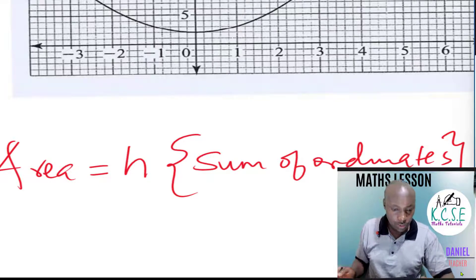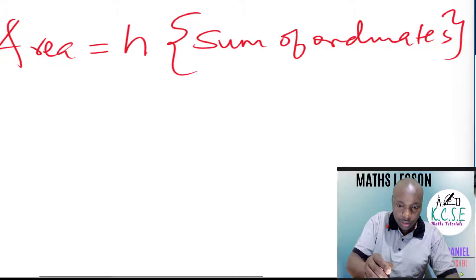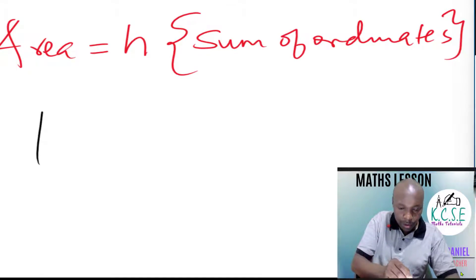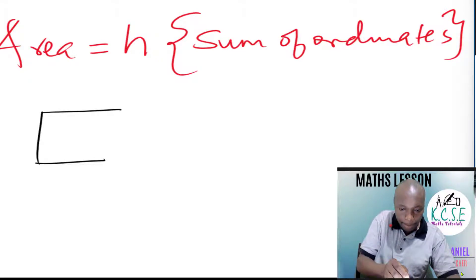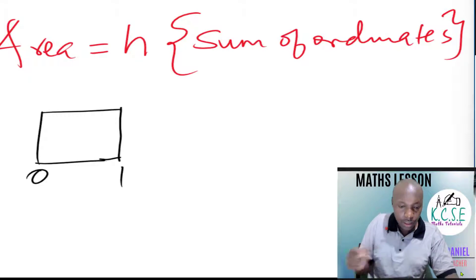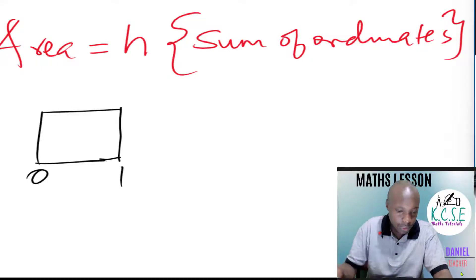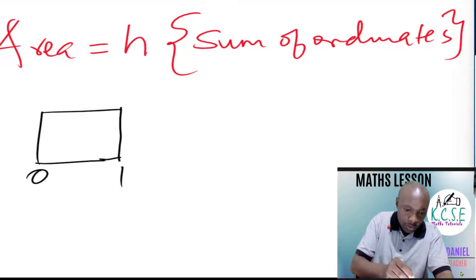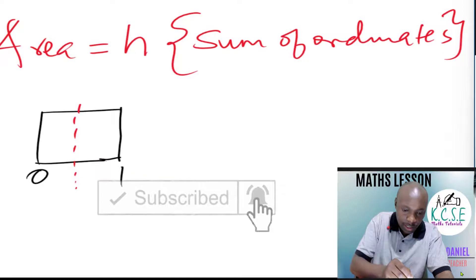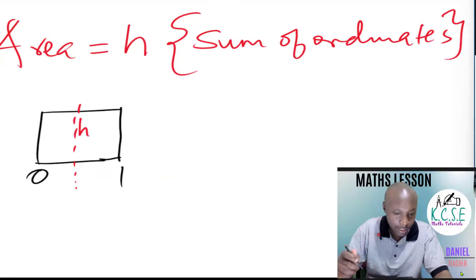Another thing we need to understand when using the mid ordinate rule: if you have a strip — for example a strip starting from zero to one — mid means the center, the center of that strip. So when using the mid ordinate rule, the height we use is exactly between zero and one, the center of that single strip.